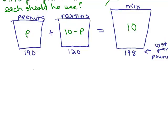Now, I'm going to put the cost of each vat, okay? So, this is going to be the total cost. So, what would the total cost of the peanuts be? Well, you've got P pounds, 190 cents per pound. You would just multiply, 190P. That's going to be the total cost of the peanuts.